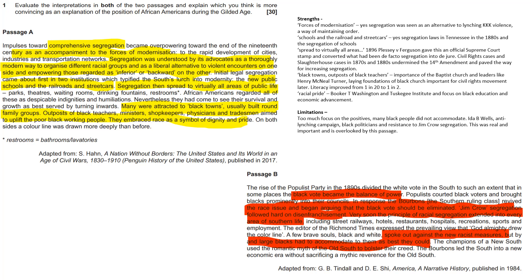However, this is too much focus on positives. Many black people did not accommodate — we could talk about Ida B. Wells and the anti-lynching campaign, the violence that really did dominate this period, and the attempts of black politicians and people to resist Jim Crow segregation. This is real and important, and overlooked by Passage A. It seems to view the period through the lens of a New South that offered an alternative to violence and lynching, thereby downplaying the very real nature of that violence and the economic degradation of black people.